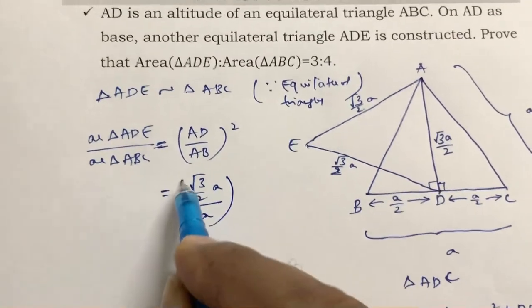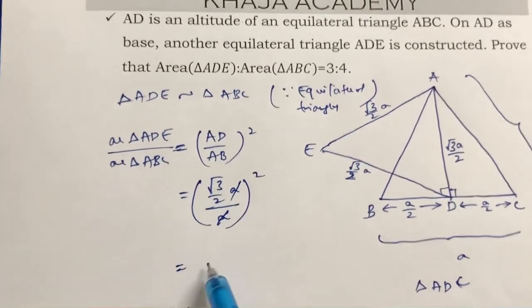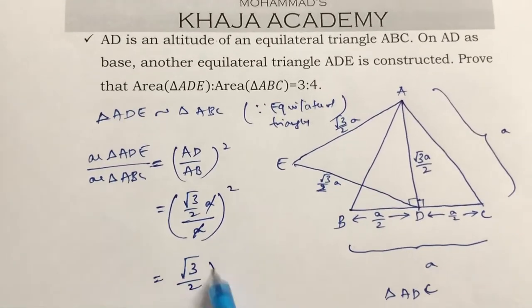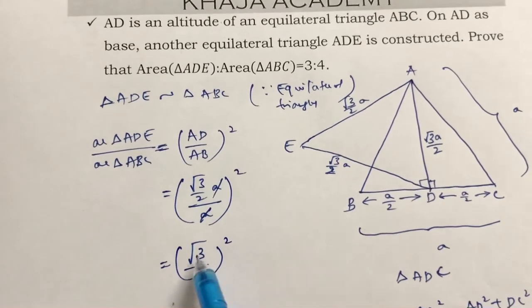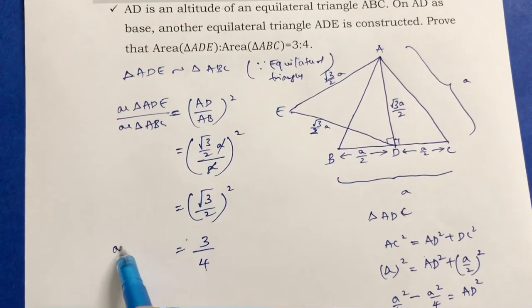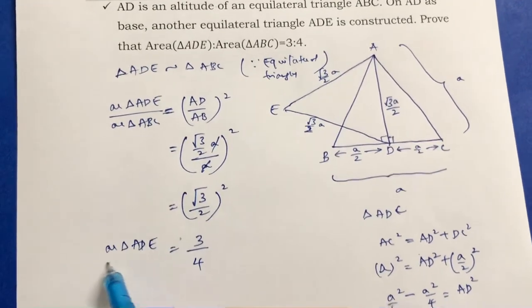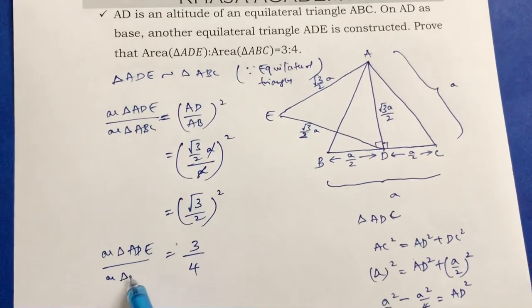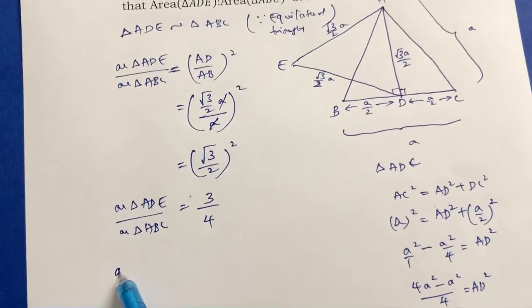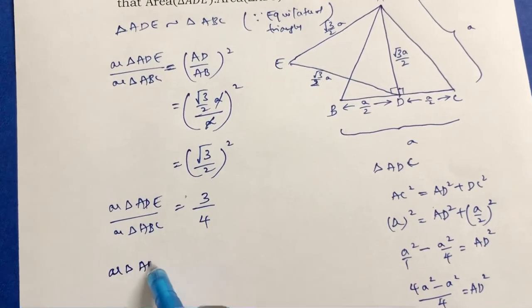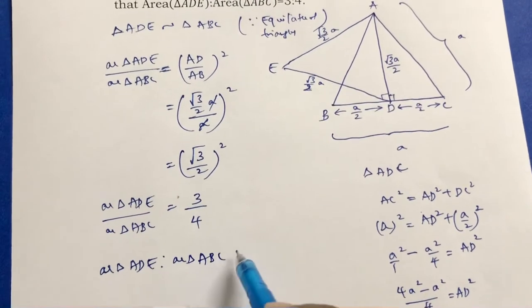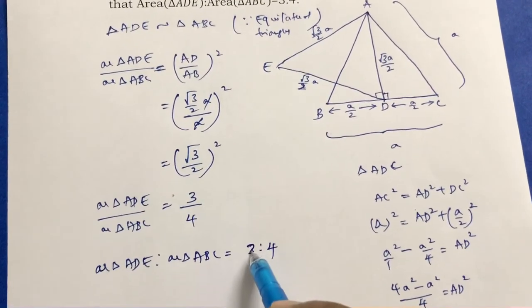A and A cancel out, leaving (√3/2)², which equals 3/4. So the area of triangle ADE to the area of triangle ABC is 3 to 4.